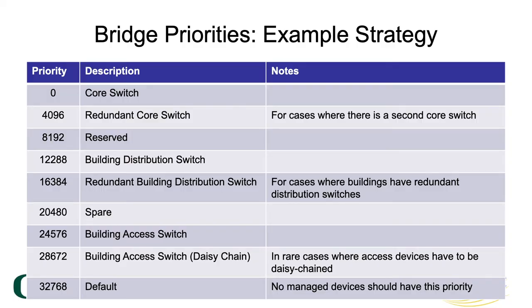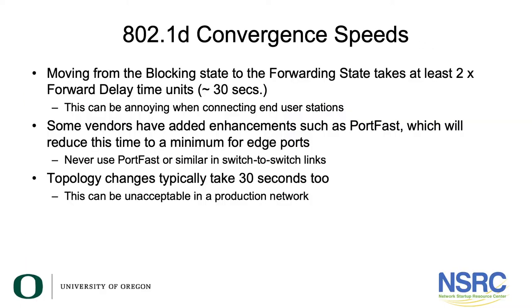These suggested bridge priorities follow our recommended design of a campus network where you root at the core and switch at each building. Your core switch will have a priority of zero; a redundant core switch would have 4096. Your building distribution switch would be 12288 (12k), the redundant one 16k. Access switches will typically have 24576 (24k). A daisy-chained access switch — which we strongly recommend you avoid — would have 28k, and 32k is the default for anything not configured.